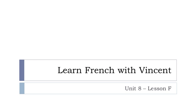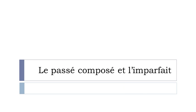Bonjour à tous and welcome to Learn French with Vincent. This is unité 8, leçon F. In this lesson we'll work together on le passé composé et l'imparfait. I just introduced this imparfait form in the previous lesson and we saw the passé composé a long time ago. It's usually quite tricky and difficult to know exactly when to use le passé composé and l'imparfait, so I thought it might be useful to spend a few minutes on that.